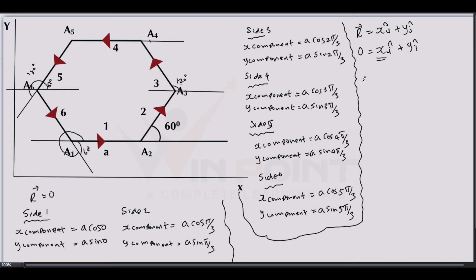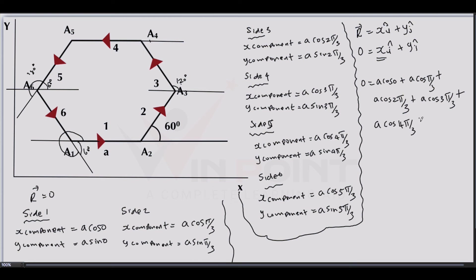Taking all the x-components and setting their sum equal to zero: 0 = a·cos0 + a·cos(π/3) + a·cos(2π/3) + a·cos(3π/3) + a·cos(4π/3) + a·cos(5π/3). Dividing both sides by a, this proves that cos0 + cos(π/3) + cos(2π/3) + cos(3π/3) + cos(4π/3) + cos(5π/3) = 0.